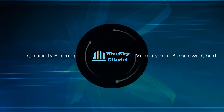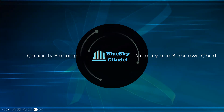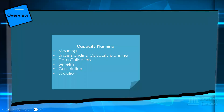This session will cover capacity planning. We'll look at velocity and burn down charts, which are part of those Chrome charts. We're going to start with capacity — the meaning of capacity planning, how we collect the data, the benefits of planning your capacity, how you do your calculation, and the location on your Azure DevOps.